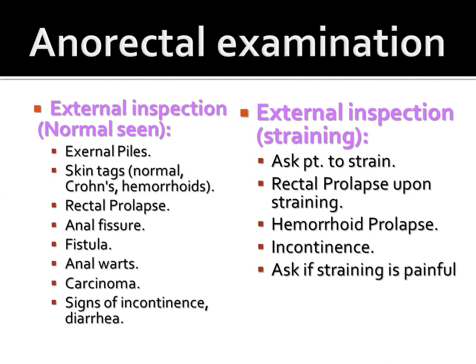On external inspection, normally we can see: external piles, skin tags, rectal prolapse, anal fissure, fistula, anal wart, carcinoma, and signs of incontinence and diarrhea. All of these conditions can be judged by external observation alone. When we ask the patient to strain toward the anal region, we can further examine for: rectal prolapse, hemorrhoid prolapse, and incontinence. If straining is painful, we should avoid it.